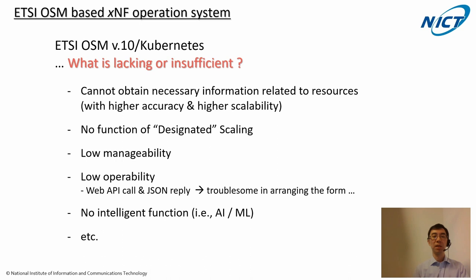OSM also has no function of designated scaling — for example, designating another virtual machine to migrate a containerized network function from the current one — and it is impossible to designate the amount of CPU resource to be increased or decreased for each CNF. Additionally, manageability is relatively low in terms of visualization support, operability is low especially when calling web APIs and receiving session replies, and there is no AI/ML function to analyze data for network function operation.